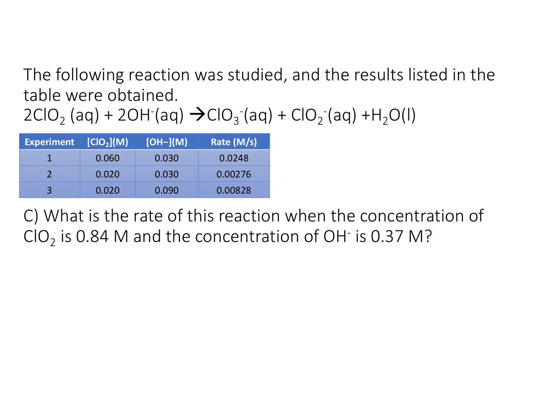Now that we know the rate law and rate constant, we can find the concentration at any time or the rate at any concentrations — at that temperature. If we change the temperature, our rate constant would change. So in the previous slide, we found rate equals k times [ClO₂]² times [OH⁻]¹.